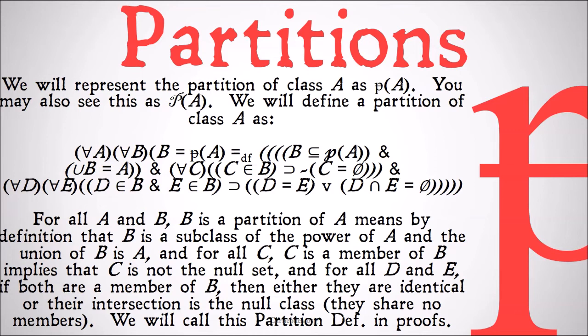The union of B equals A means that all members are somewhere. And for all C, C as a member of B implies that C is not the null set — the null set is not a member. And for all D and all E, D as a member of B and E as a member of B implies that D equals E, or the intersection of D and E is the null set. That whole section is saying that no members of our partition can share members themselves — either they're the same thing, or they don't share any members. Their intersection is the null set. We'll call this the partition definition in proofs.